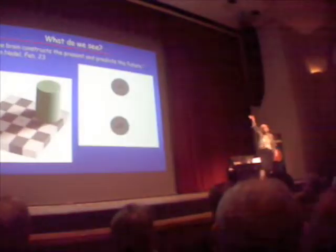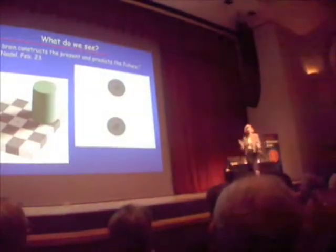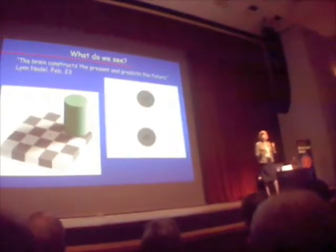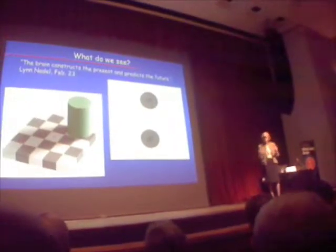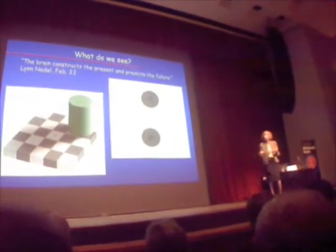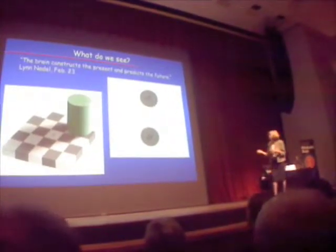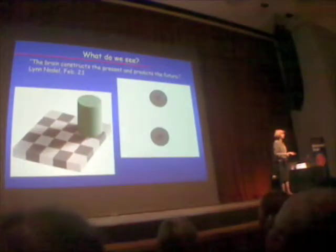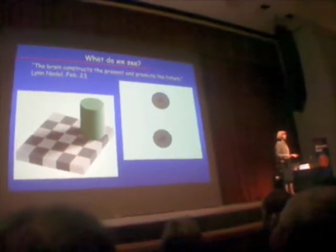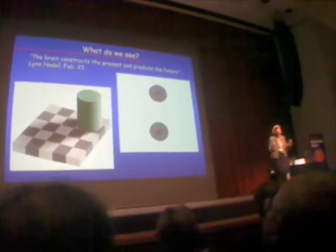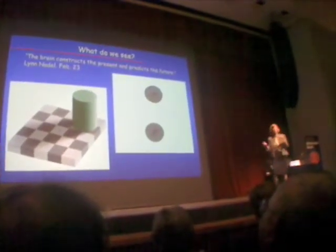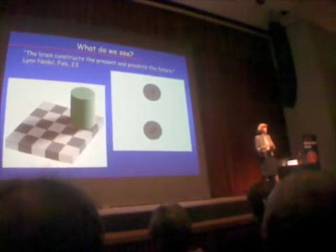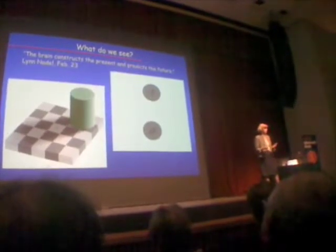I don't think — if there's anybody who can, raise your hand. I don't think you can make your brain believe that those two squares, A and B, are the same color, because you cannot not see them in context.